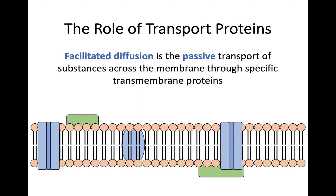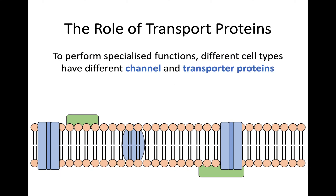So because of this, we have something called facilitated diffusion. Facilitated diffusion is still a passive, or non-use of energy, mode of transport across the membrane, but it uses specific transmembrane proteins that are there for a certain job. And there are two different types of these: channel proteins and transporter proteins.